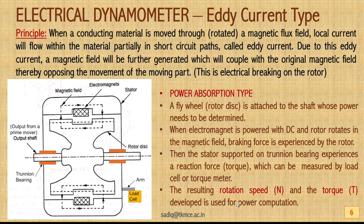Now let us see another kind: the electrical dynamometer. We discuss the eddy current type, which is again a power absorption type. The principle is that when a conducting material is rotated in a magnetic flux field, local currents flow within the material in short-circuit paths — these are called eddy currents. Due to these eddy currents, a magnetic field is generated which couples with the original magnetic field, thereby opposing the movement of the rotor. This is called electrical braking.